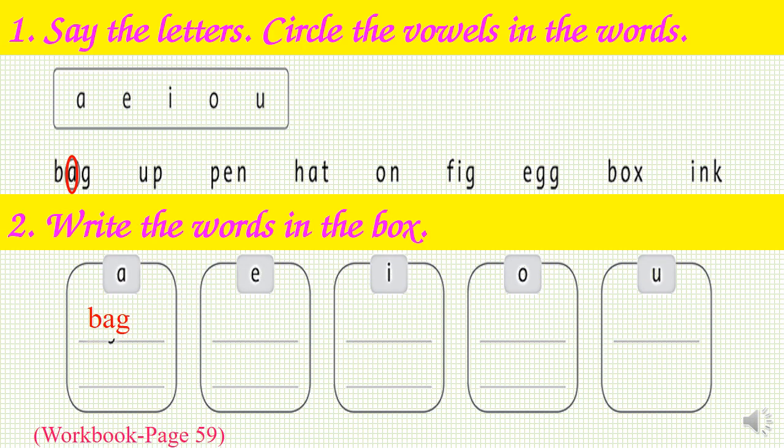Now open your workbook on page 59. Let's look at Exercise 1: Say the letters and circle the vowels in the words. Say the letters with me: Letter A, letter E, letter I, letter O, letter U.